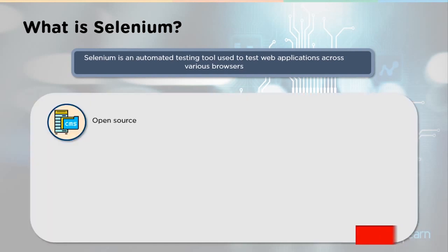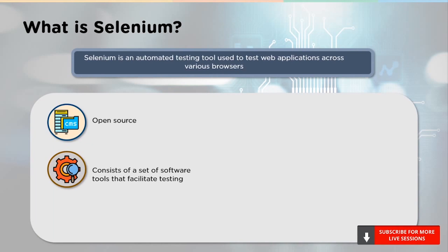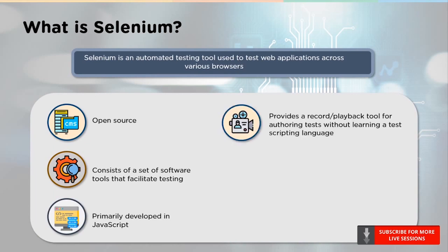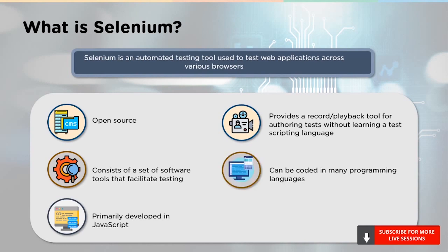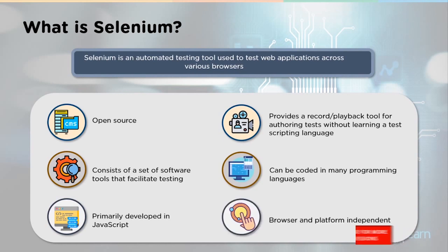Selenium is open source. It consists of a dedicated set of tools, which we'll discuss shortly. It is primarily developed in JavaScript. It provides a record and play feature without having to learn any scripting language, and it can also be coded in several programming languages. It is a browser and platform independent tool, meaning it can run on multiple browsers like Chrome, Safari, and Firefox, and on multiple operating systems like Windows, Mac OS, or even Linux.